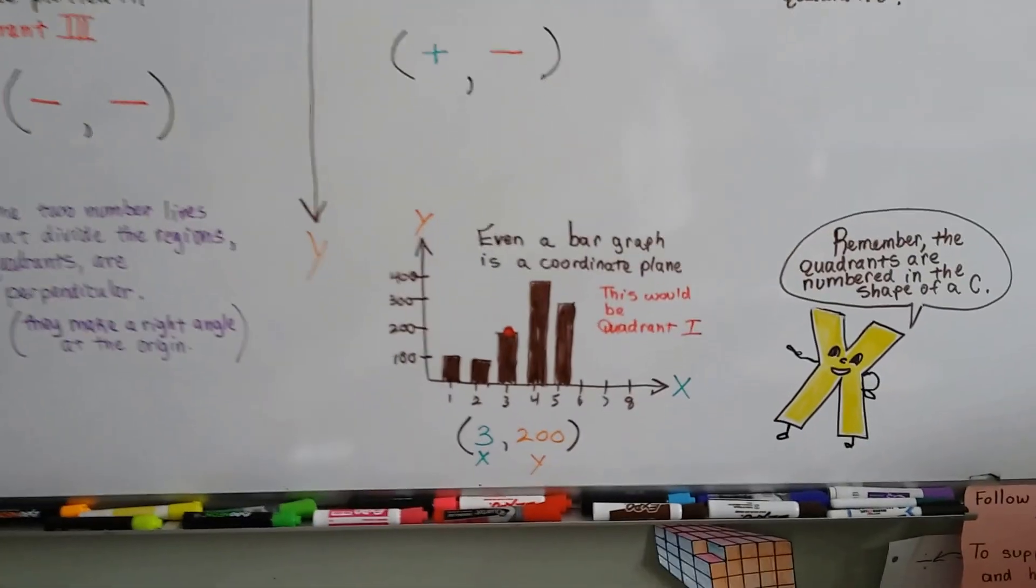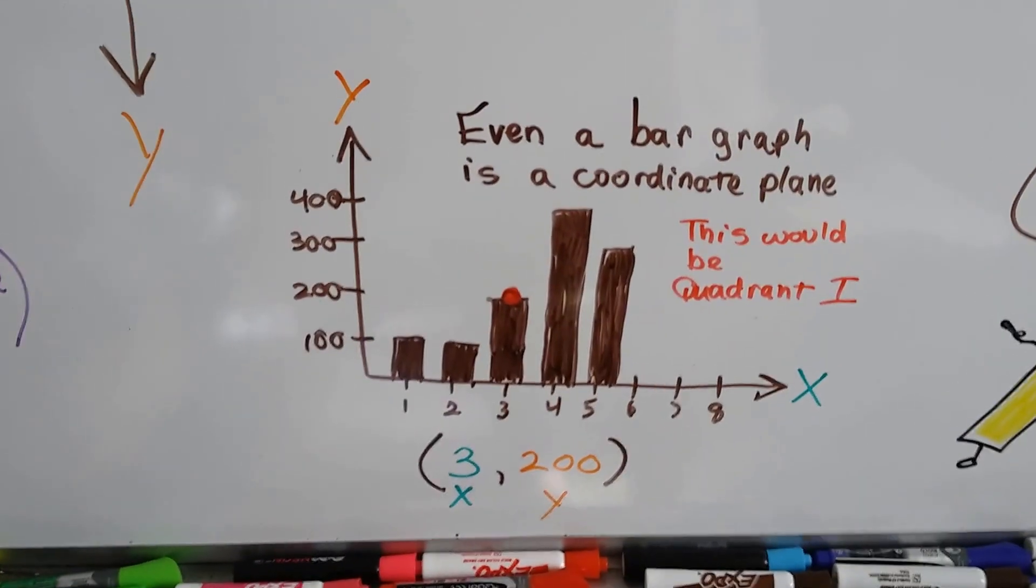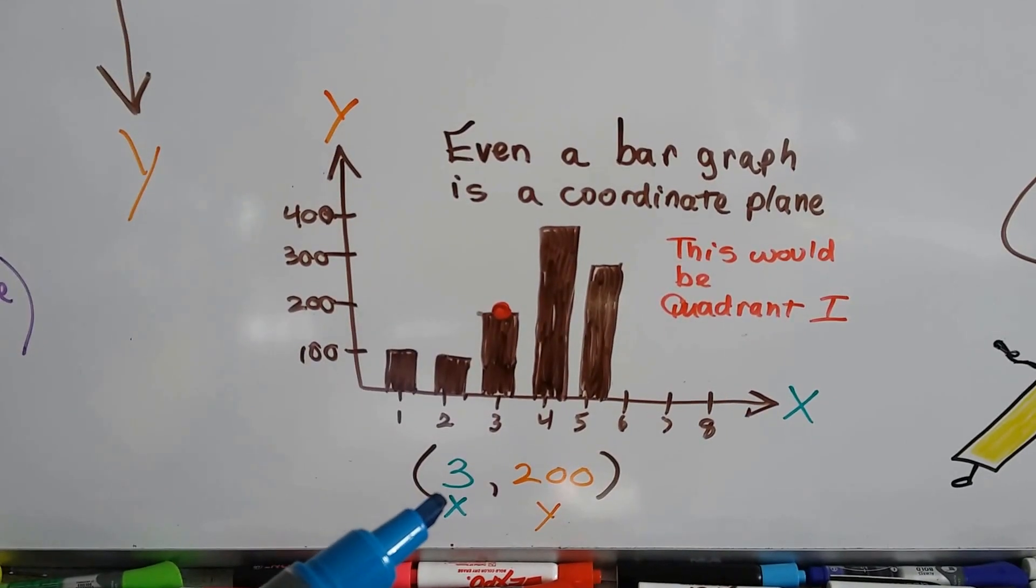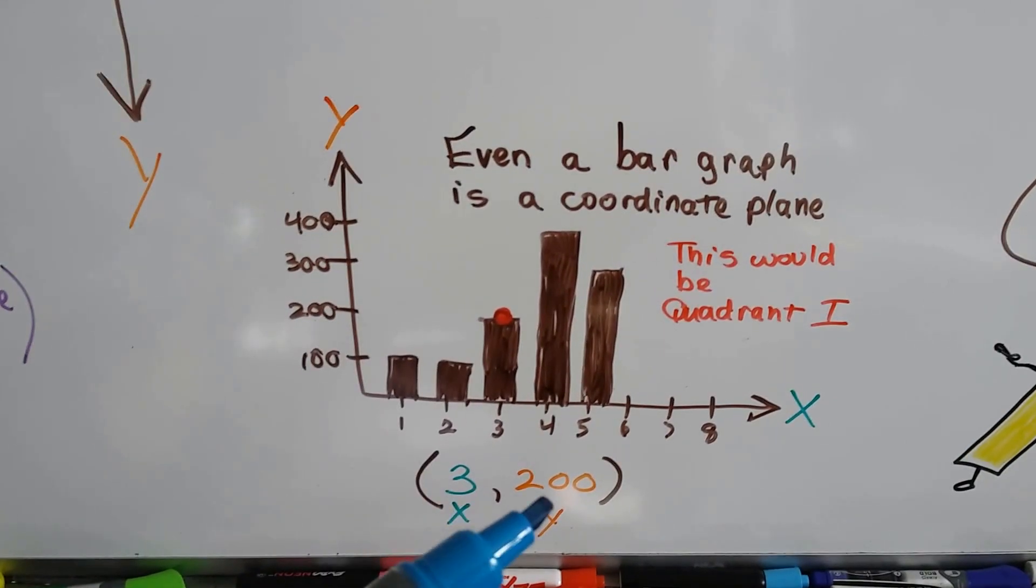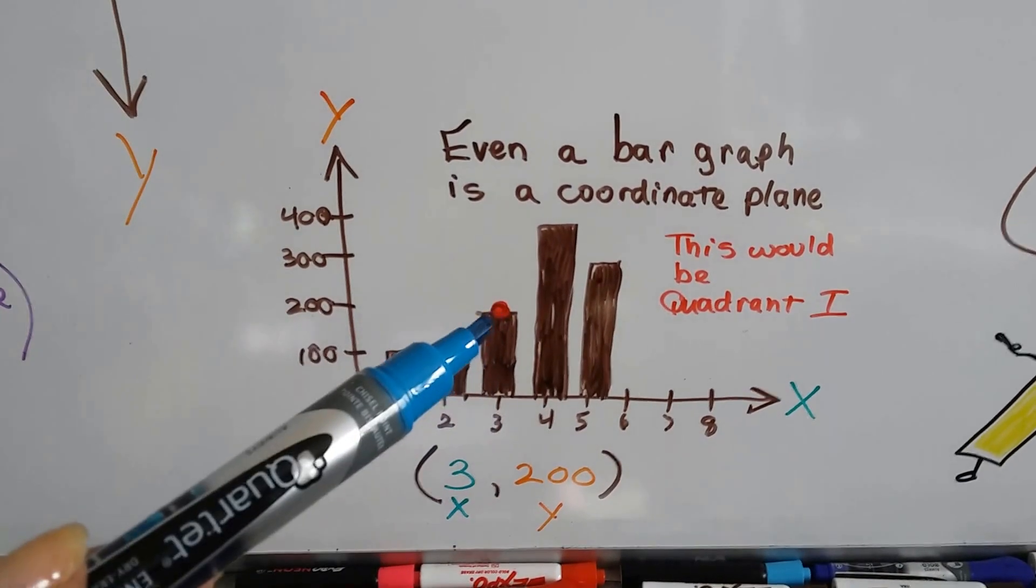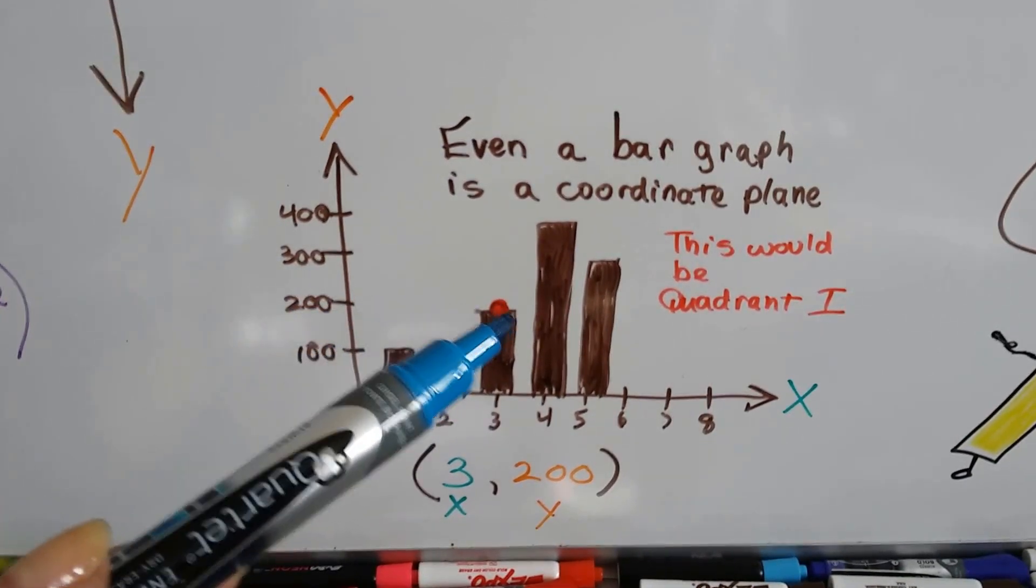Did you know that even a bar graph is a coordinate plane? This would be quadrant one because they're both positive. So if we had three comma two hundred, three would be the x and two hundred would be the y. That'd be right there. It'd be three, two hundred. See?